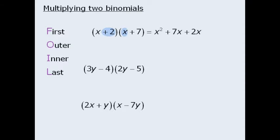And finally we multiply the last term in each binomial. Here positive 2 times positive 7 equals positive 14.